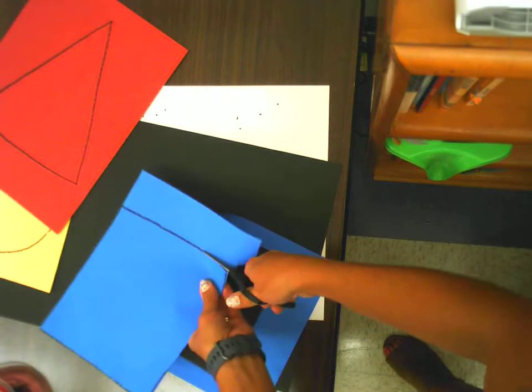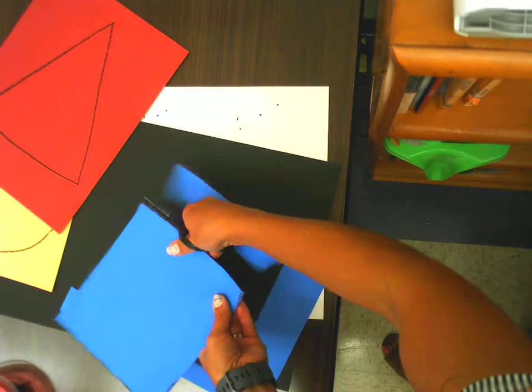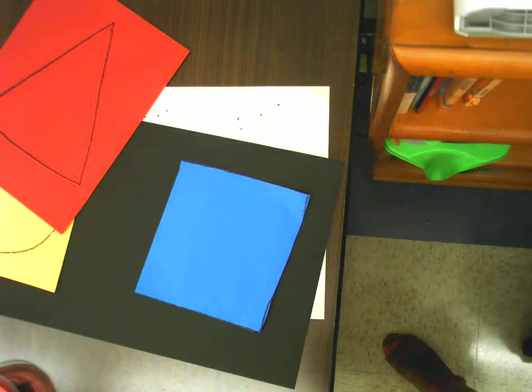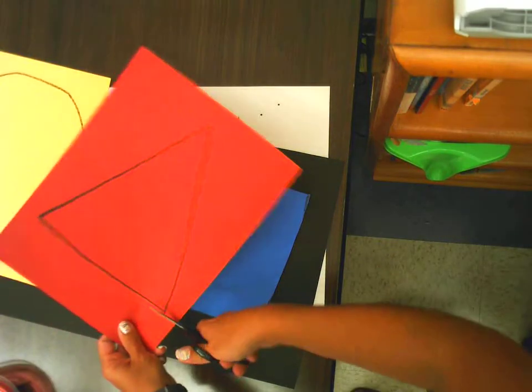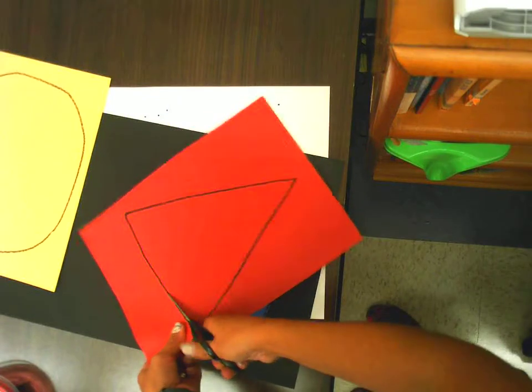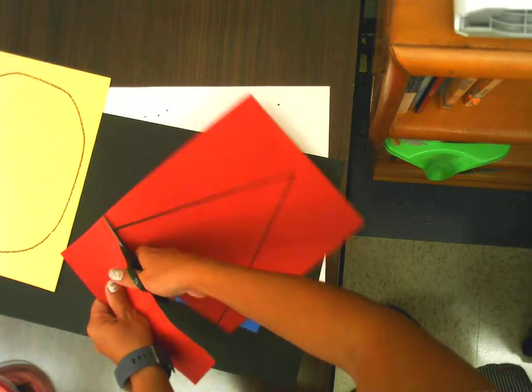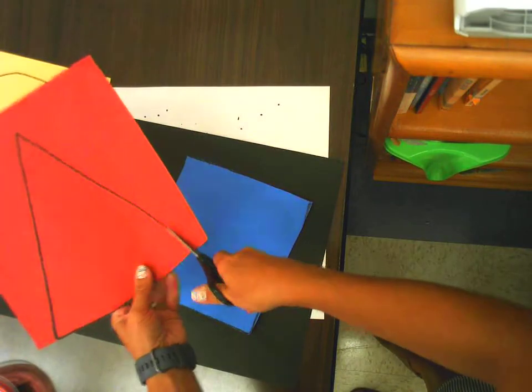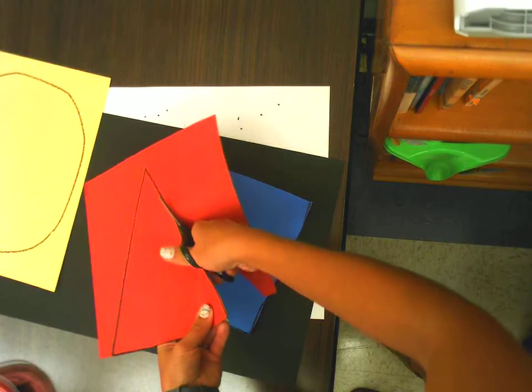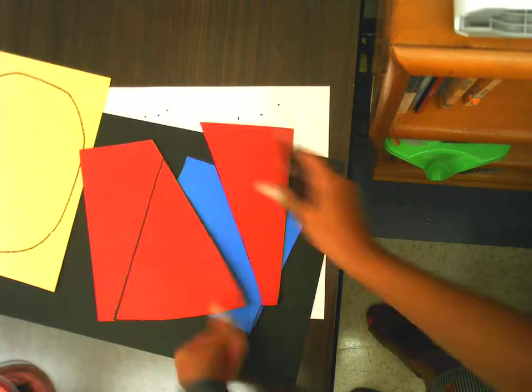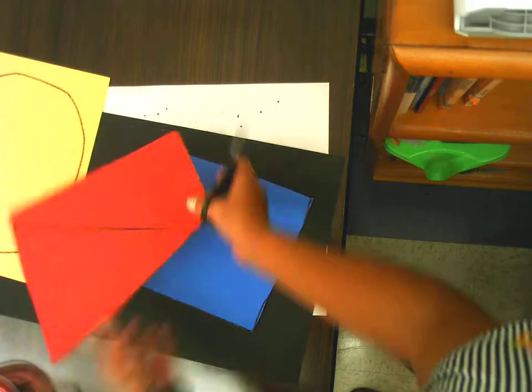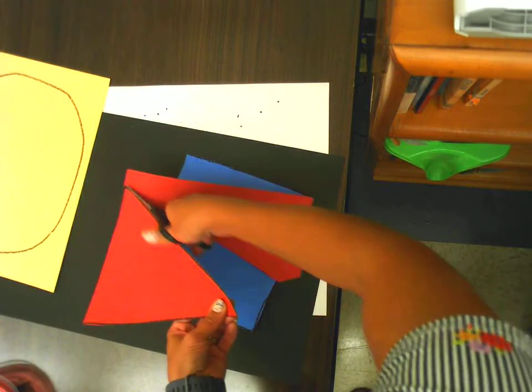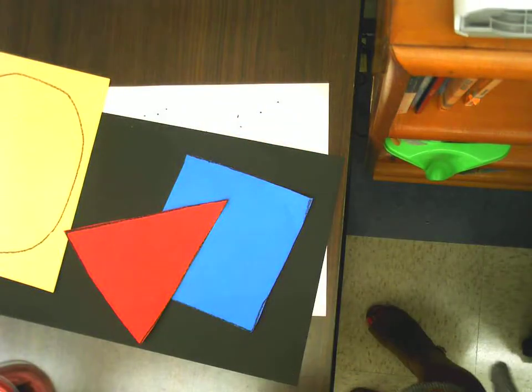When you cut, move your paper around. Here is my square. It might be easier for you to cut off sections. That might help you get to the rest of the lines. There is my triangle.